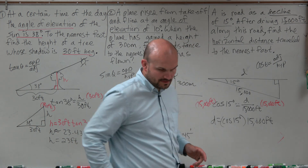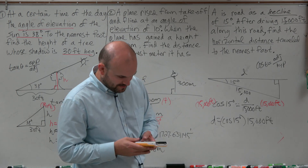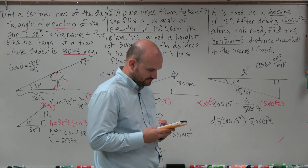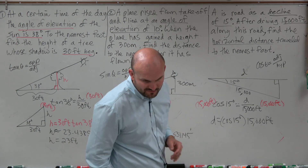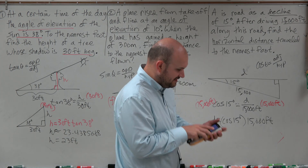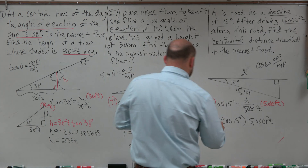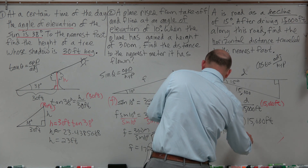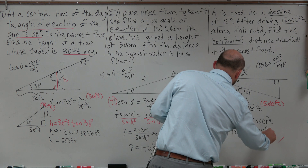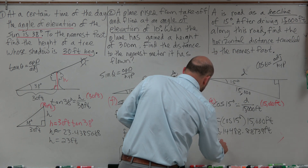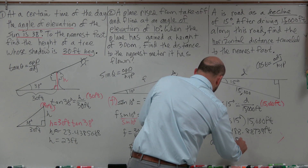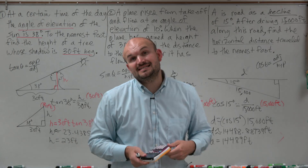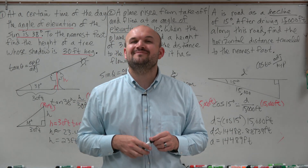Cosine of 15 times 15,000 gives approximately 14,488.88739. Rounding to the nearest foot, d equals 14,489 feet. And that's how you solve word problems using basic trigonometry.